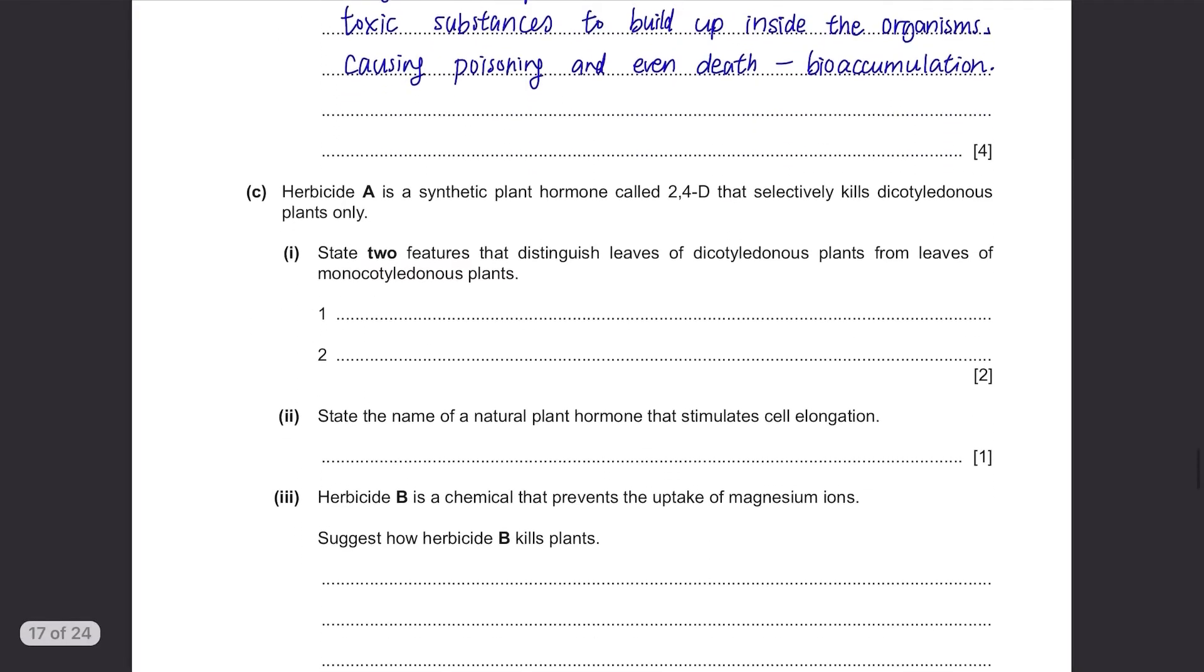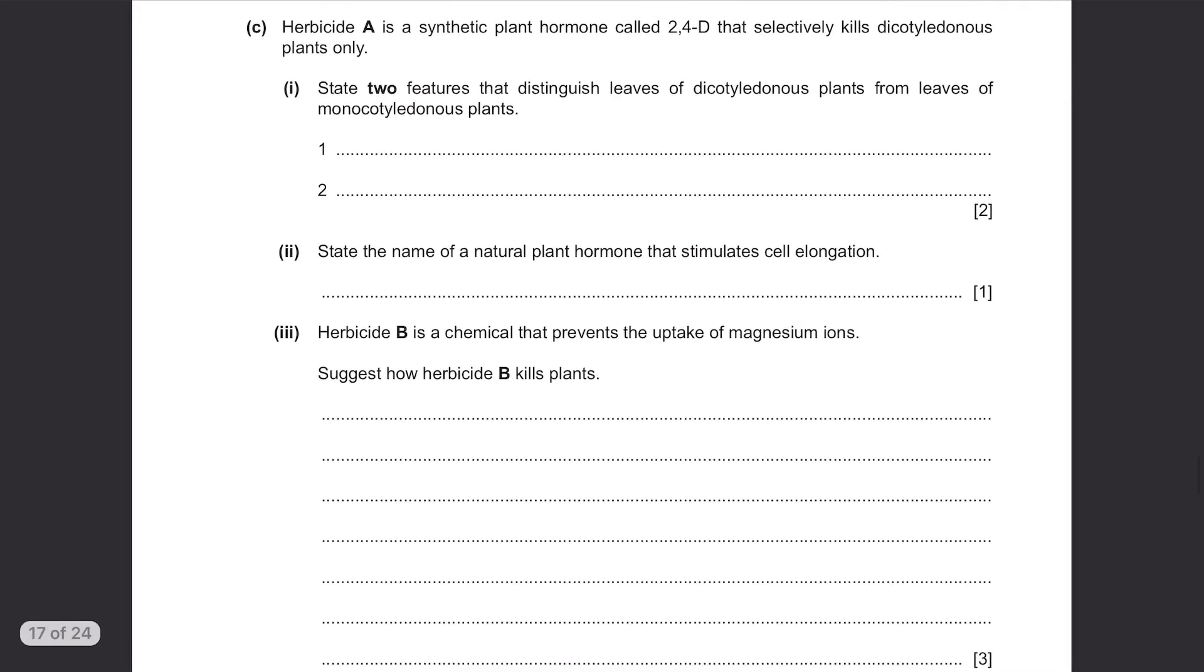Part C. Herbicide A is a synthetic plant hormone called 2,4-D that selectively kills dicotyledonous plants only. State 2 features that distinguish leaves of dicotyledonous plants from leaves of monocotyledonous plants. This is a common question.